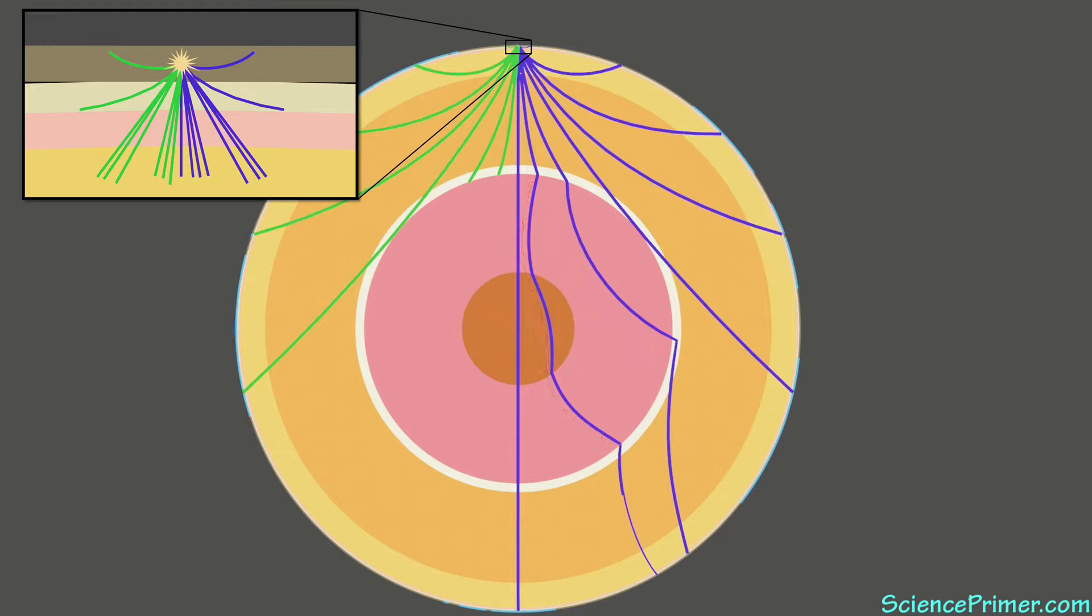The speed of travel and the refraction patterns of P waves is consistent with there being another seismic discontinuity at the boundary between the molten outer and solid inner cores.